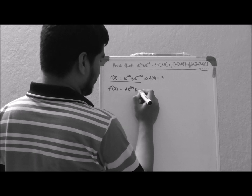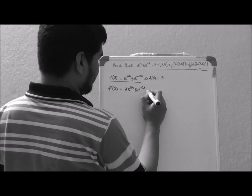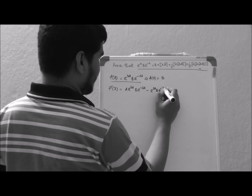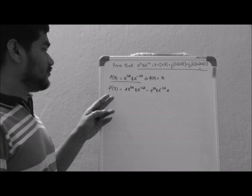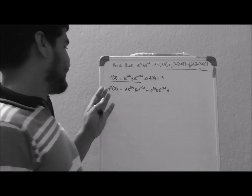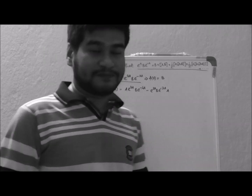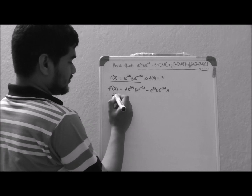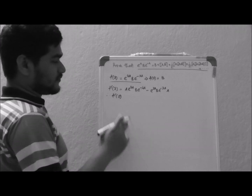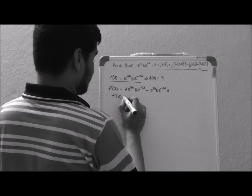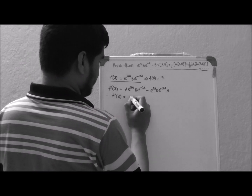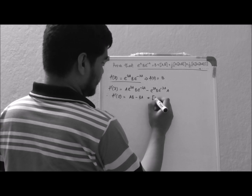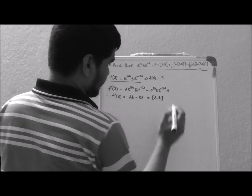minus e to the power lambda A, B e to the power lambda A times A. So we have differentiated f(lambda) with respect to lambda and found this. So f'(lambda) for lambda equal to 0 becomes AB minus BA, which is actually the commutator [A, B].